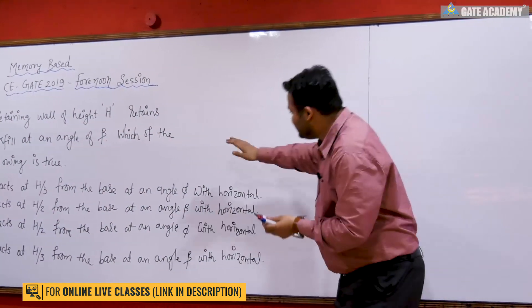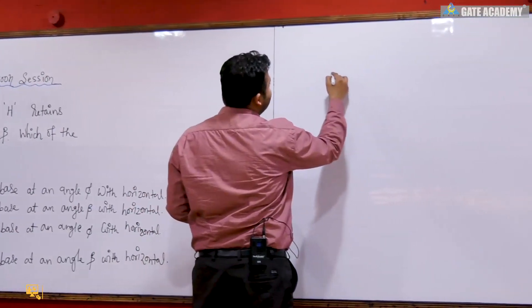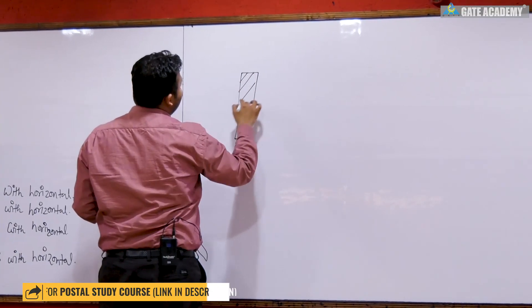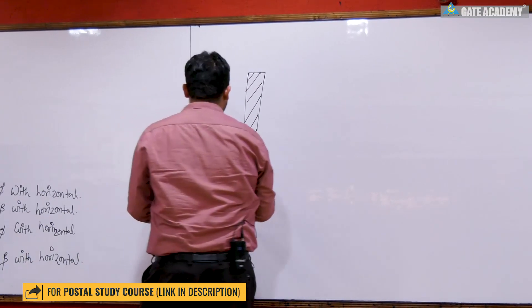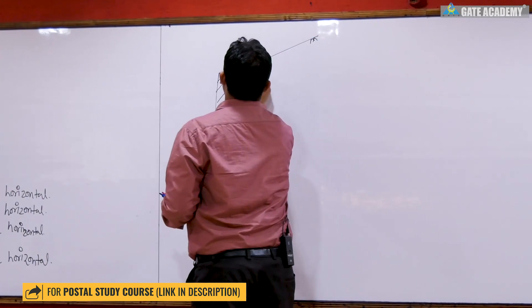I know that if I have a retaining wall and suppose this retaining wall is retaining an inclined backfill, in that condition, if I assume that it is retaining at beta angle...